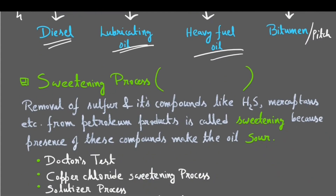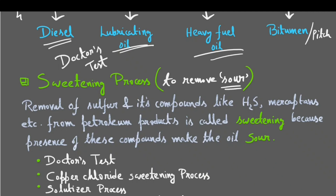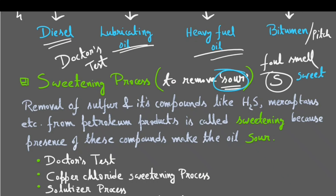Now let's talk about a very important laboratory test of petrol known as doctor's test. It is done for most petroleum products to remove sourness. The sourness originates from the fact that most petroleum contains sulphur-related compounds or sulphur itself. To convert this crude sour petroleum product into a sweet one, we apply the sweetening process. By definition, removal of sulphur and its compounds like hydrogen sulfide and mercaptans — what are mercaptans?